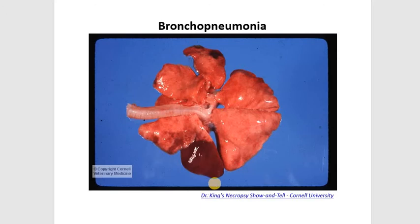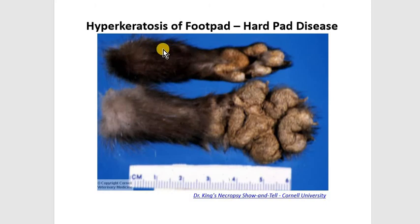In this picture we can see an affected lung. There are scattered dark firm areas on multiple lobes, consistent with locally extensive areas of bronchopneumonia. In this picture we can see a normal footpad compared to a swollen hyperkeratotic footpad, and that's why this disease is also called hard pad disease.